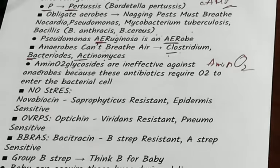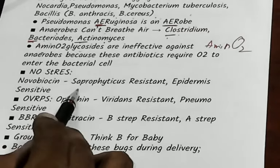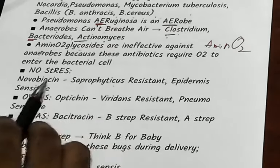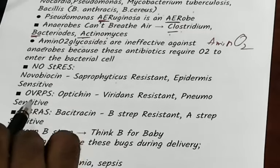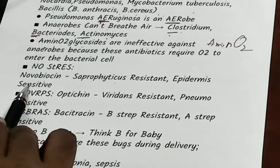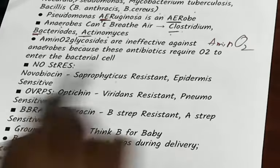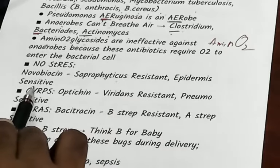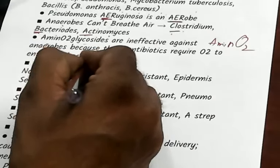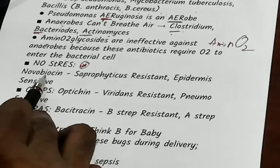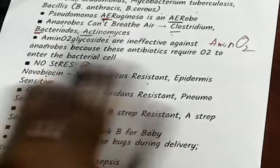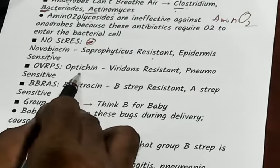For novobiocin sensitivity: Staphylococcus saprophyticus is resistant to novobiocin, while Staphylococcus epidermidis is sensitive. Remember: no stress — novobiocin, saprophyticus resistant, epidermidis sensitive. A favorite MCQ.